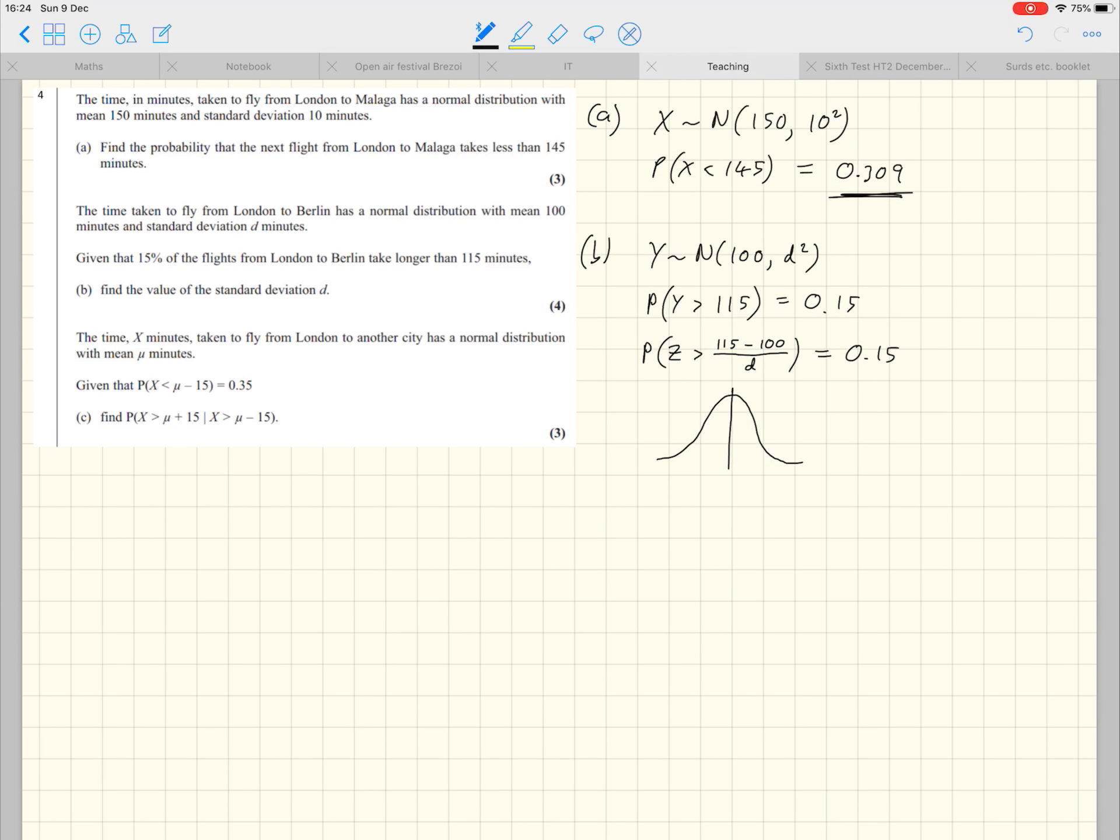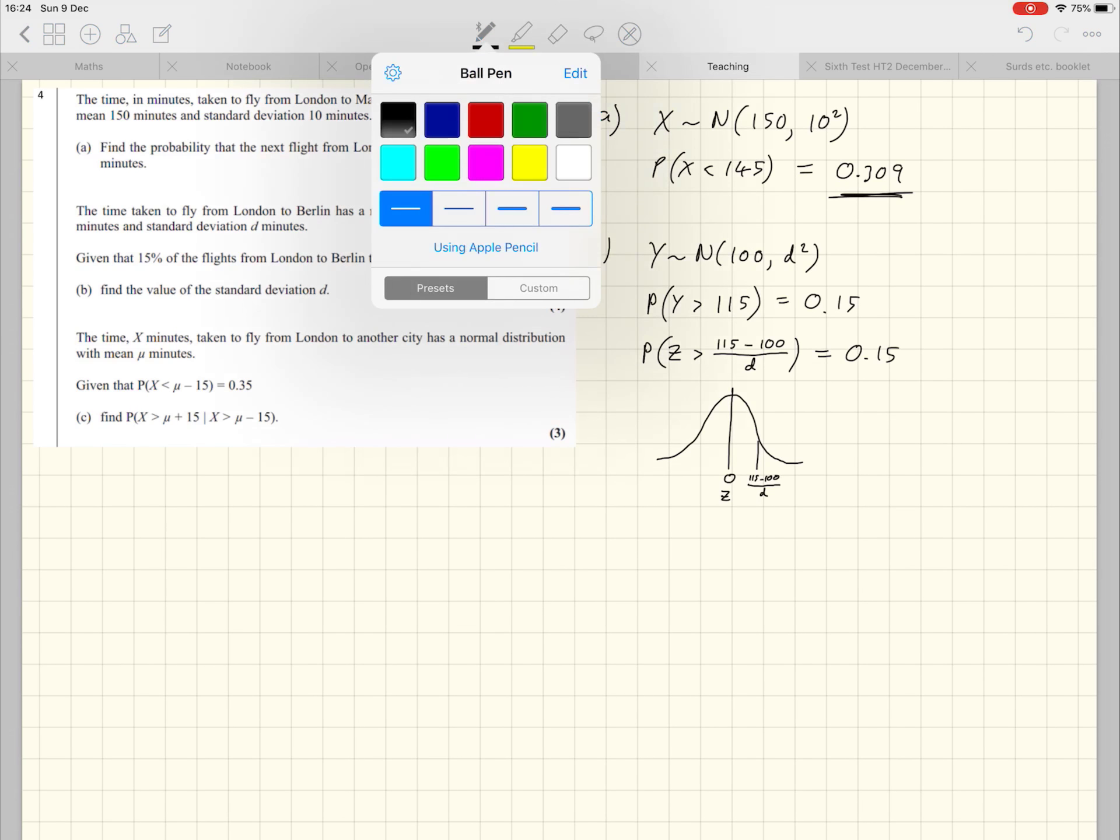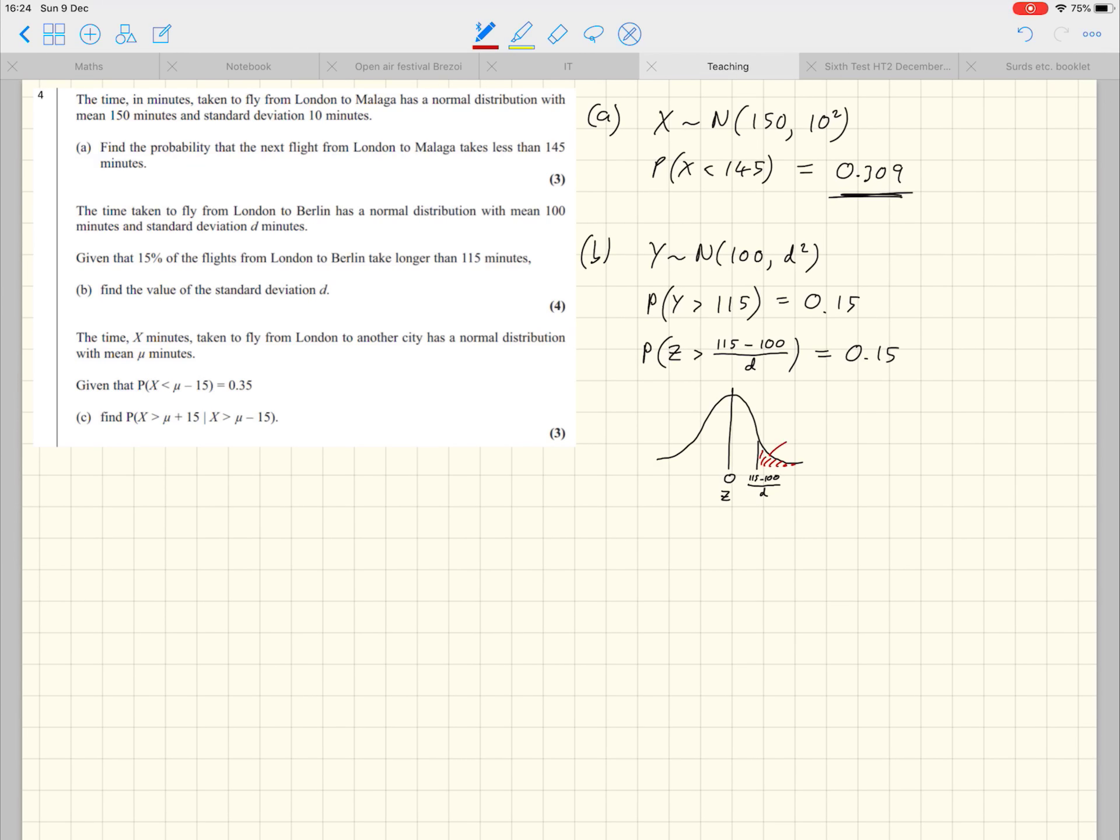Before we go any further, I think it's important to just sketch out the bell curve. You might be able to do this in your head, but a sketch is always recommended. We know the mean, but this is the standard normal, so it's in terms of Z, the mean is zero. And the probability that Z is greater than some value, this is the 115 minus 100 over d, is 15% or 0.15. And therefore, obviously, because the total area is one, this bit here must be 0.85.